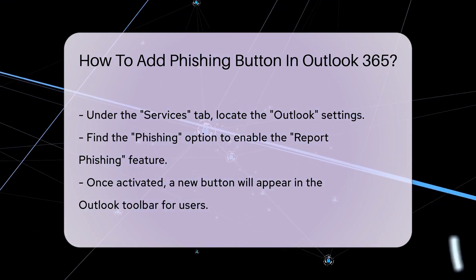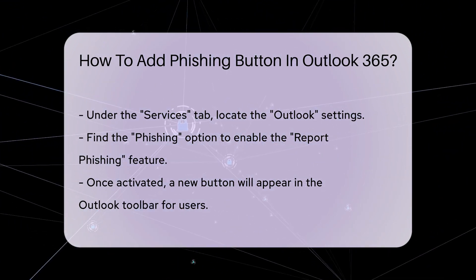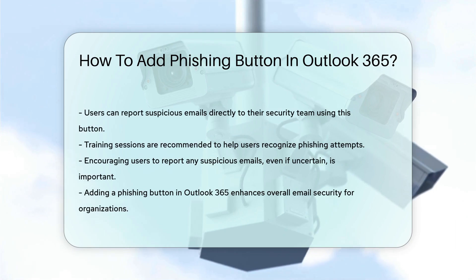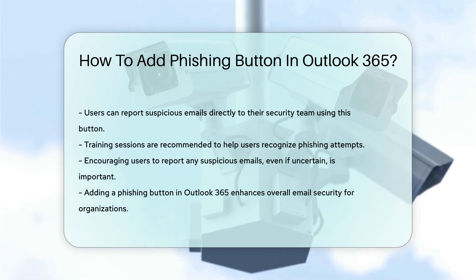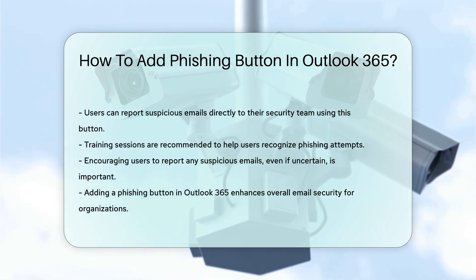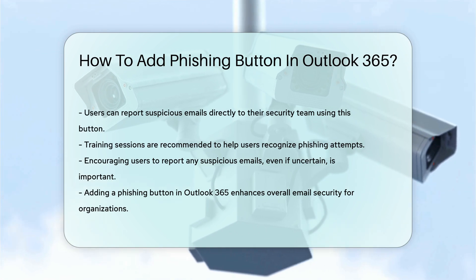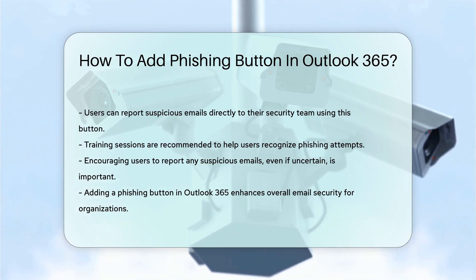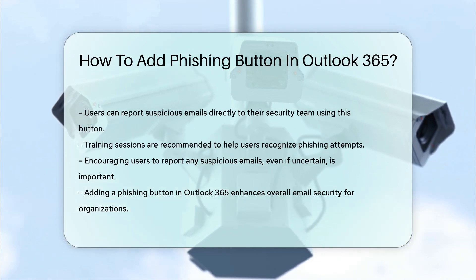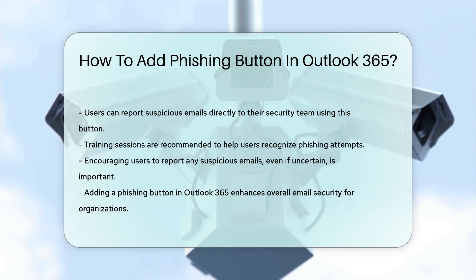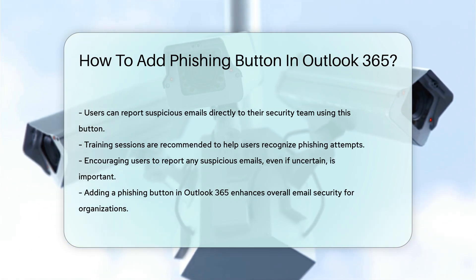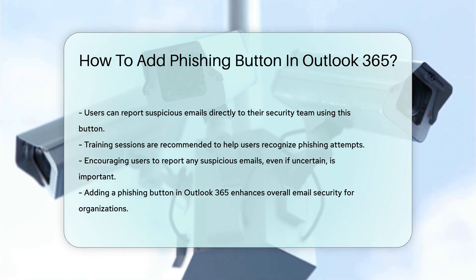Training sessions can help users recognize phishing attempts. Encourage them to report any emails that seem suspicious, even if they are unsure. In conclusion, adding a phishing button in Outlook 365 is a straightforward process that enhances email security.